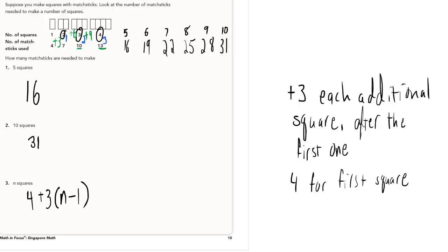First, let's rethink about this expression we've created. So no matter how many squares, we're always going to start with four matchsticks. That's correct. That's what we've talked about.